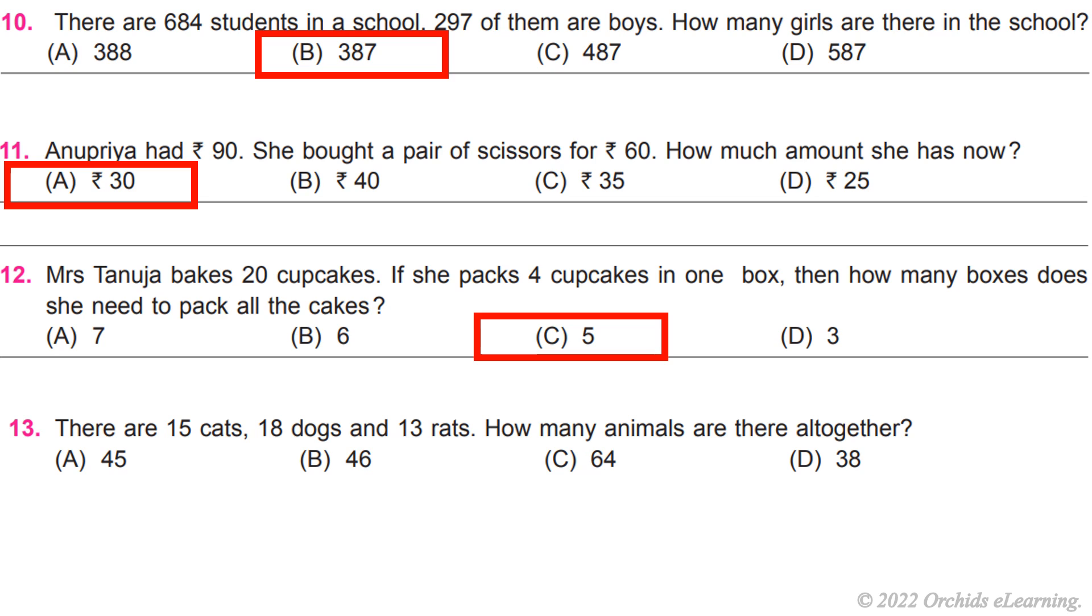There are 15 cats, 18 dogs, and 13 rats. How many animals are there altogether? B) 46.